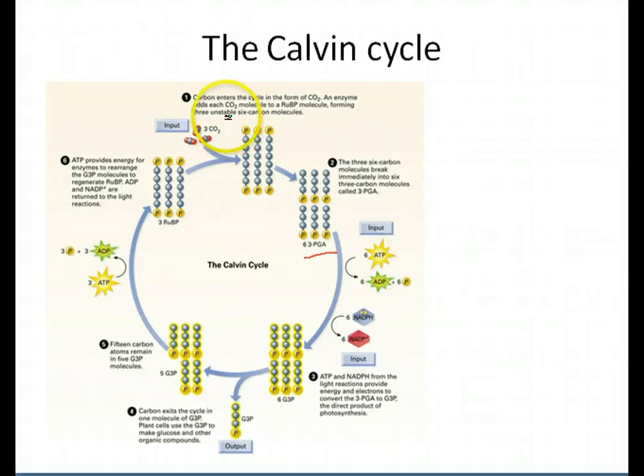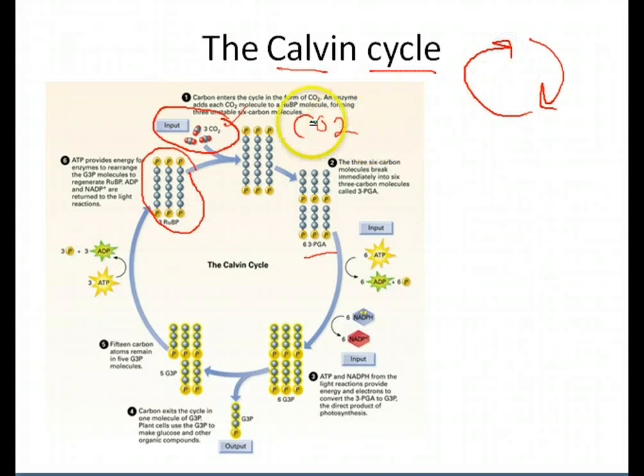What you do need to know is that there's a certain reactant that goes into the Calvin Cycle, and that is carbon dioxide. We just mentioned that. So carbon dioxide is going to be attached to the leftover intermediate. So this is the Calvin Cycle. It's a cycle. That's why we have this circular pathway. It's what creates a cycle.